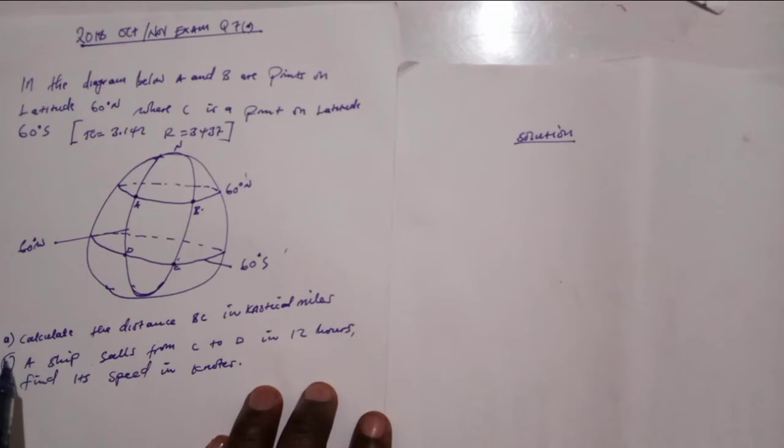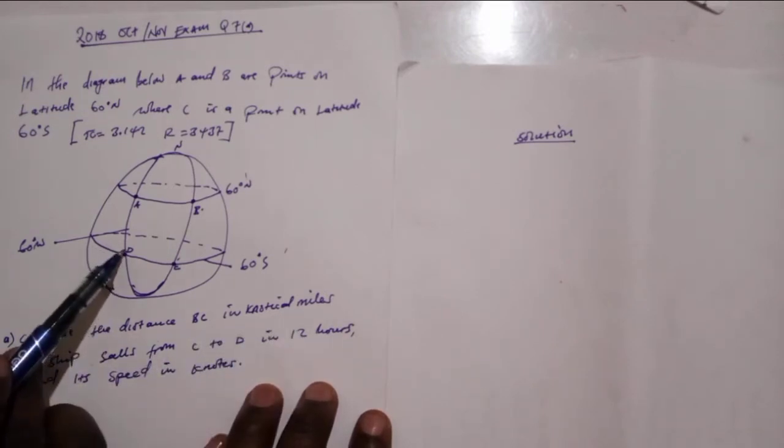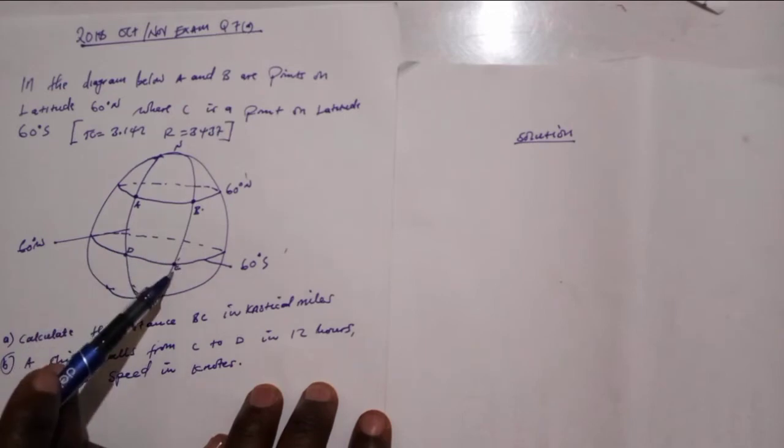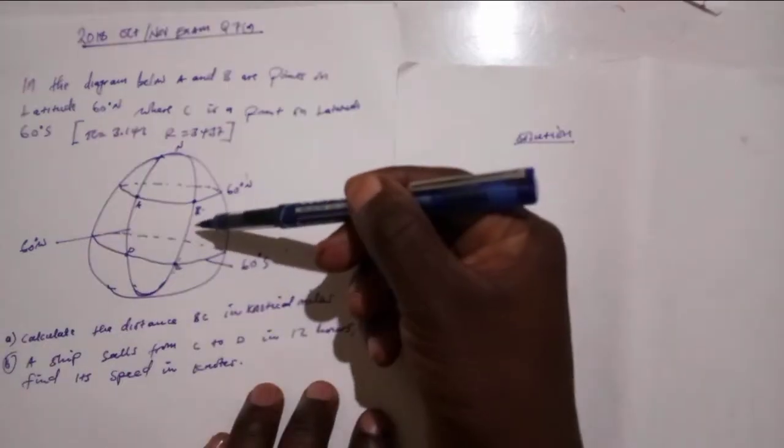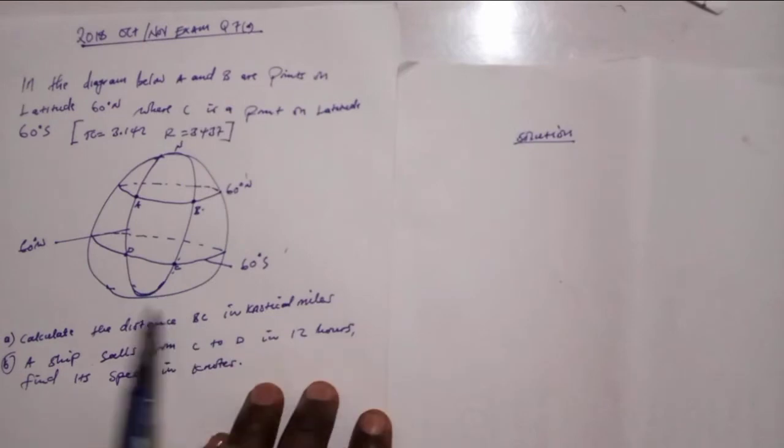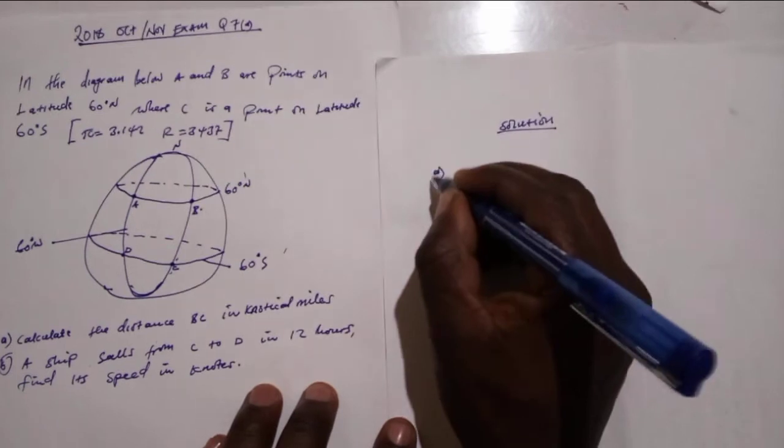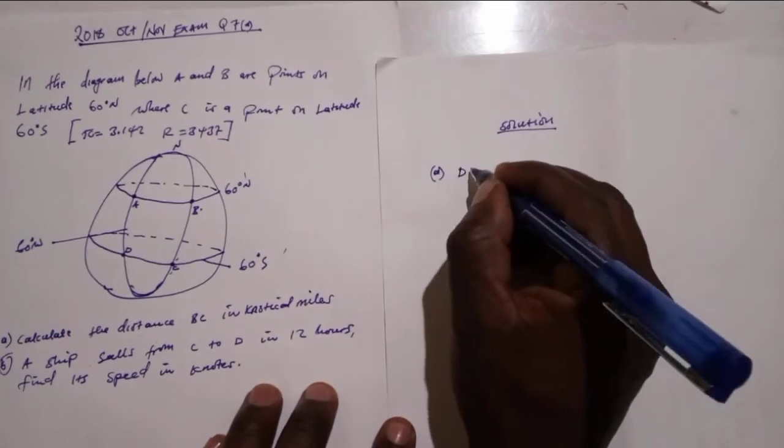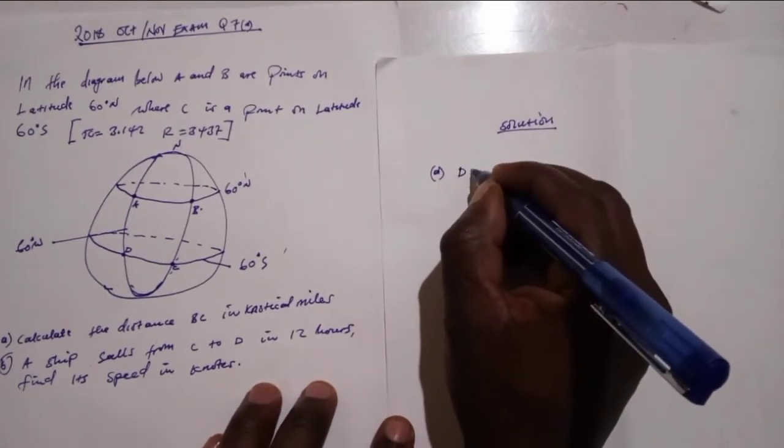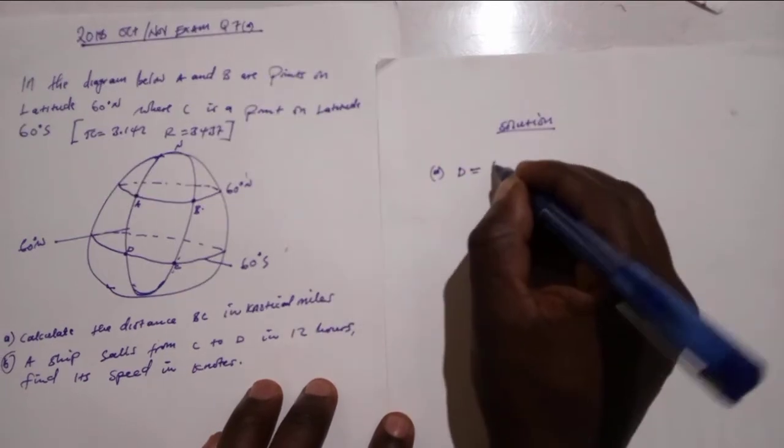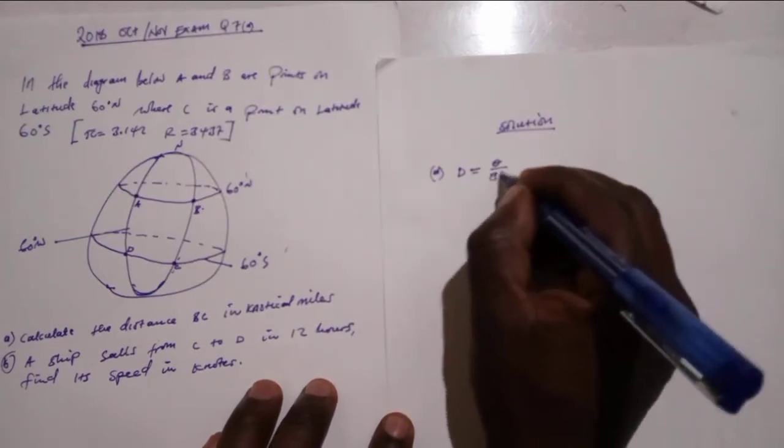Question A: we are told to calculate the distance BC in nautical miles. As you can see, this distance is along the longitude. To compute the distance, the distance is given by this formula which is d equals theta over 360 degrees multiplied by 2πr.